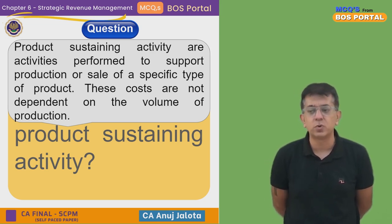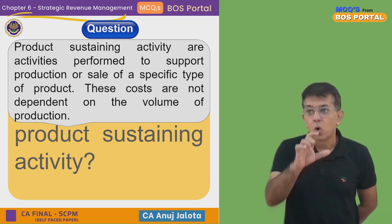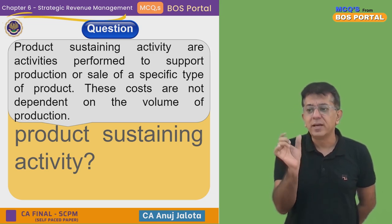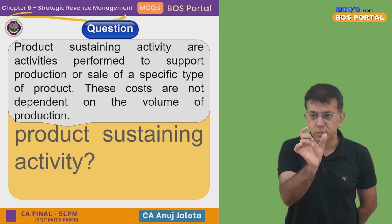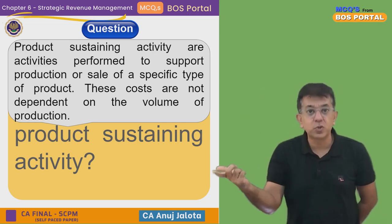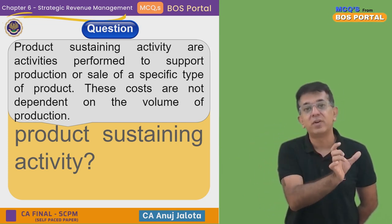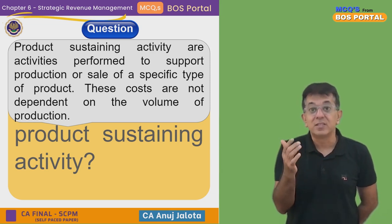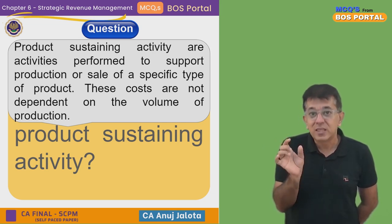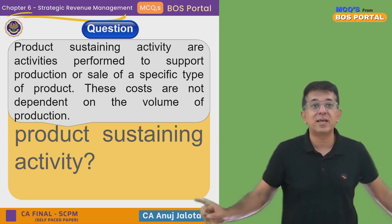Examples include designing cost, and laying down which processes a product must pass through — say process one, process two, process three, then back to process two, to become a finished product. This kind of routine is laid down only once for a product. I'm not saying the product won't pass through these processes each time — it will — but the planning of those processes is done only once. These are product sustaining activities.